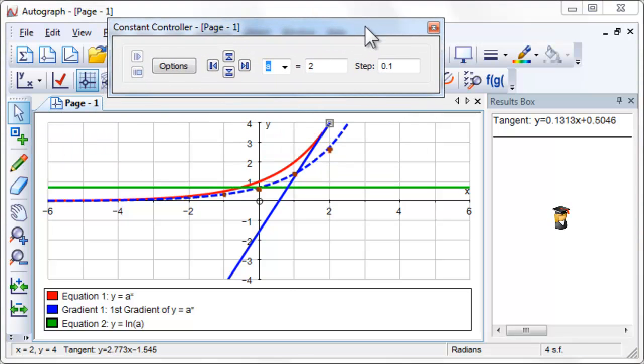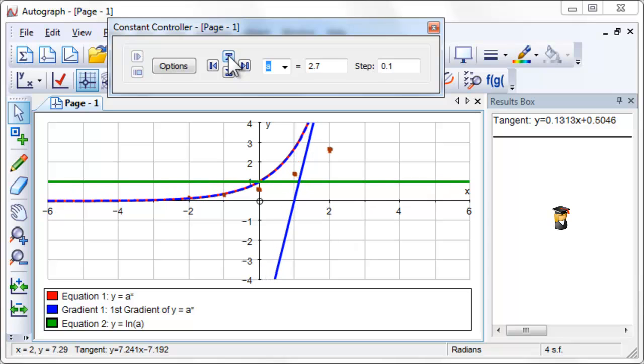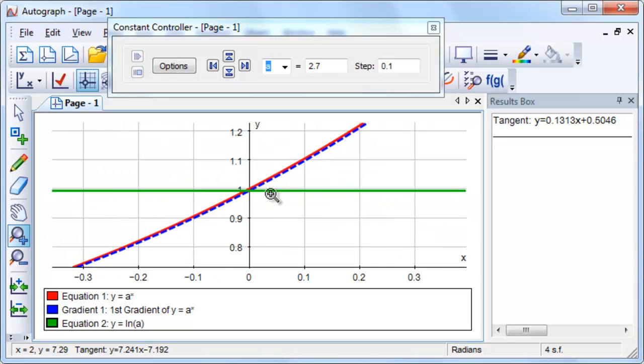Use the constant controller to change the value of a. Zoom in and change the value of a until the gradient function lies on top of the original.